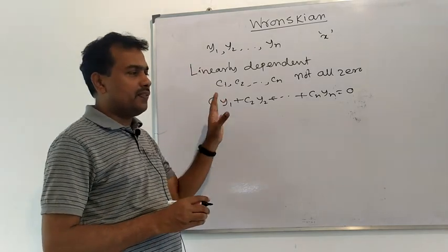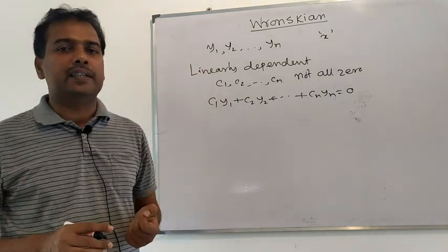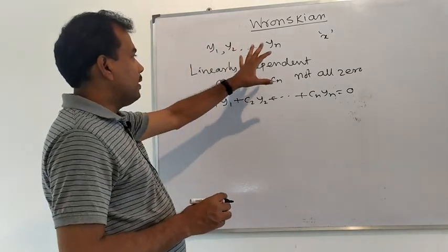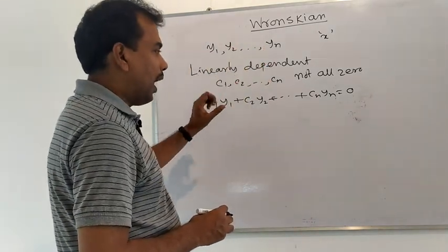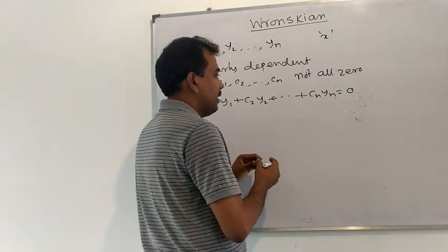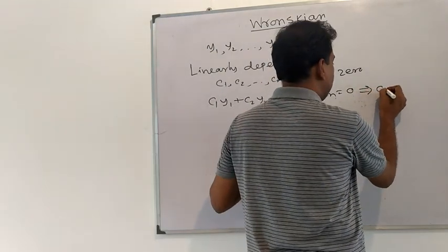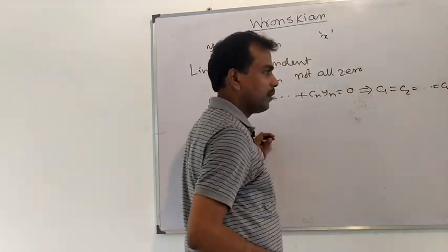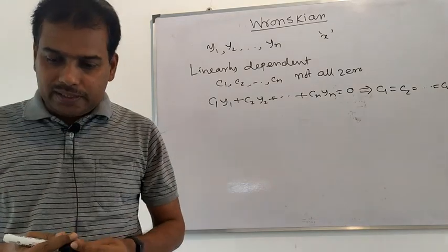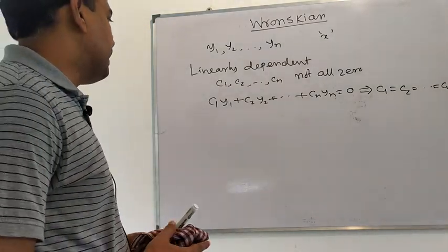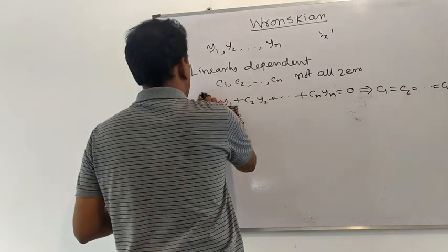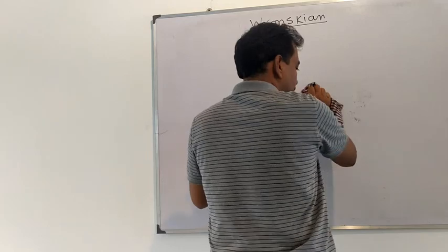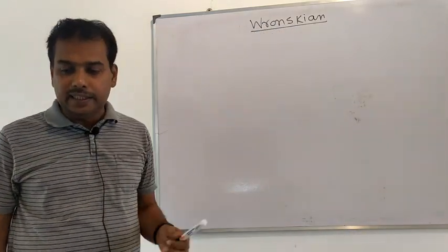If the set of functions is not linearly dependent, then it is called linearly independent. That is, if y1, y2, ..., yn are linearly independent, then this implies c1 = c2 = ... = cn = 0. That is, all the coefficients are equal to zero. That is the set of functions y1, y2, ..., yn are linearly independent.